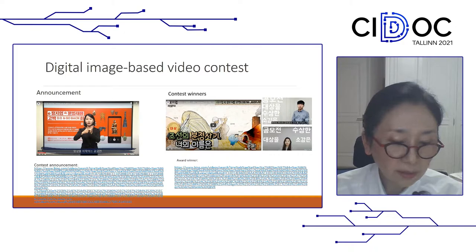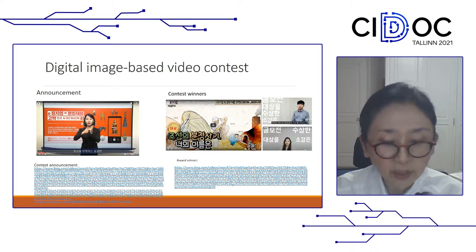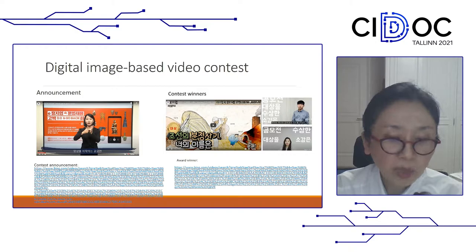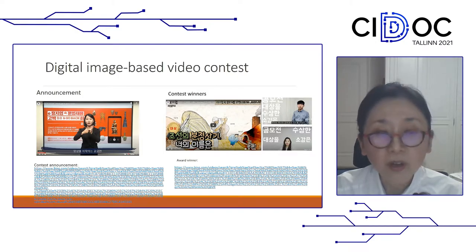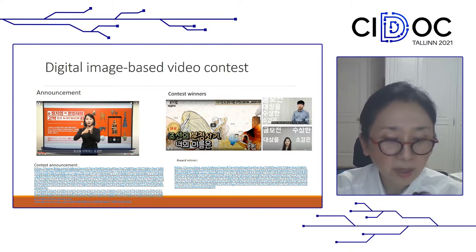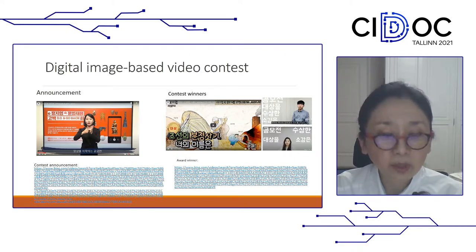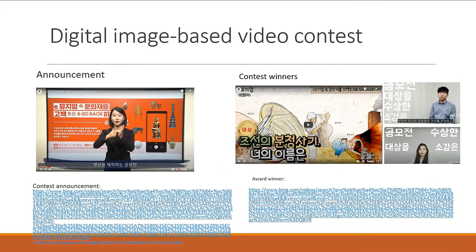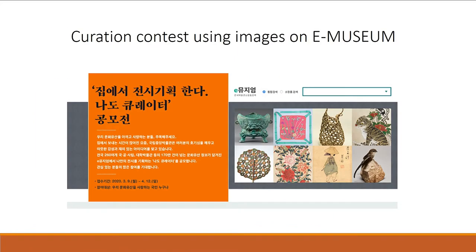During the COVID-19 pandemic, the National Museum tried to activate the use of digital archives by launching a digital image-based video contest. Here is the announcement on the left and the final submitted work on the right. This was an attempt to activate the digital archives with the public. There was also a curation contest using the digital archives, which were efforts on the part of the museum to activate the use of digital archives.